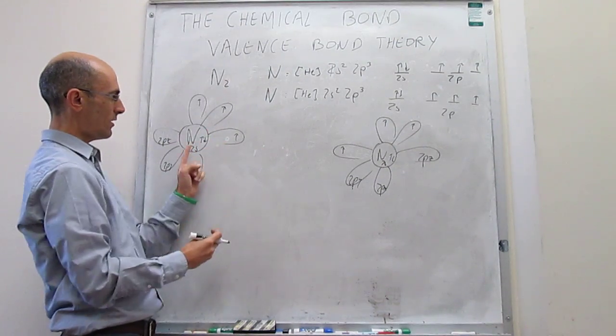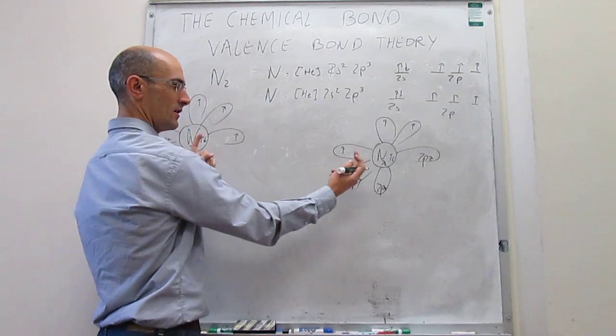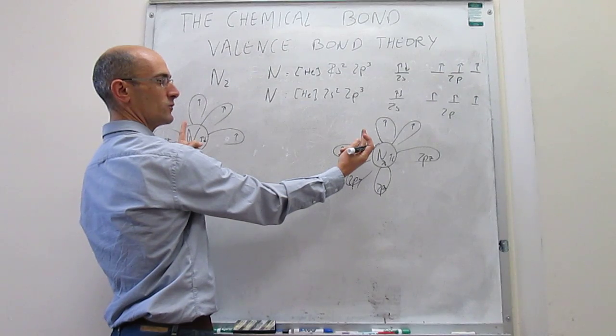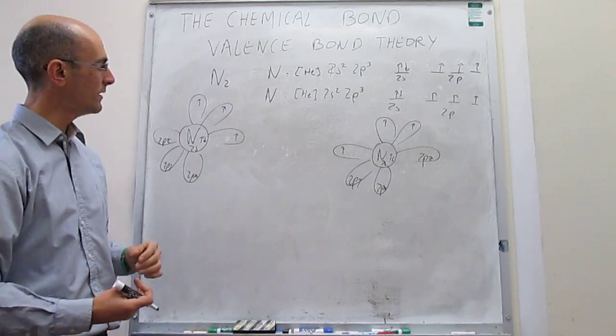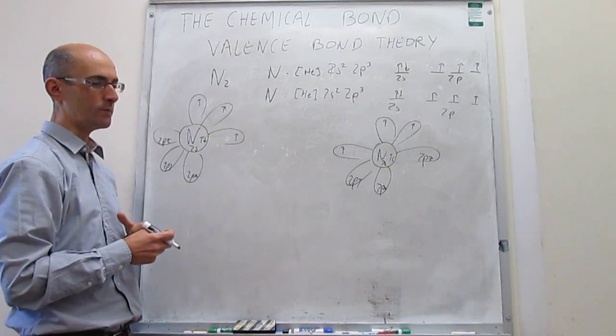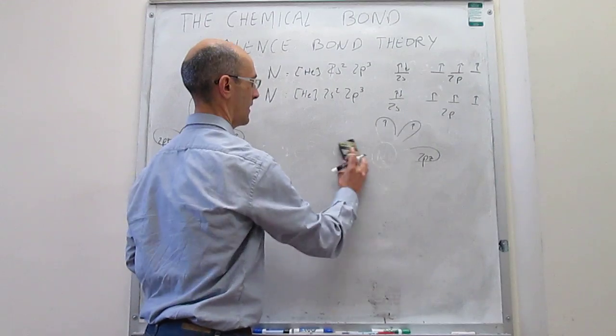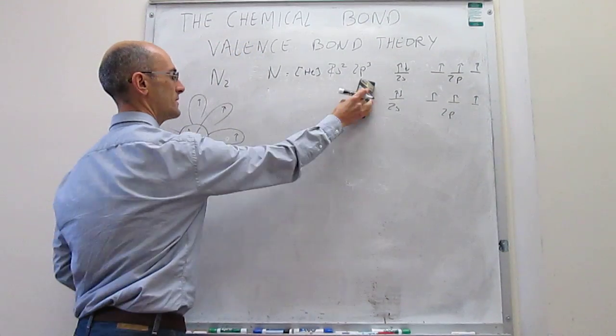What will happen is that you now have 2px pointing in this direction, 2px pointing in this direction, they are singly occupied, so overall, they only have two electrons, which might make it possible for them to overlap, and the same thing is going to happen for the 2py. Let's actually try to draw how that actually happens.